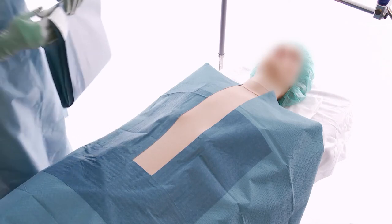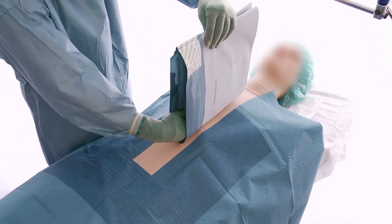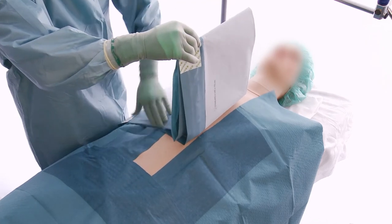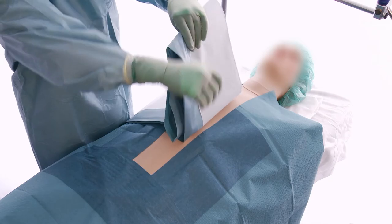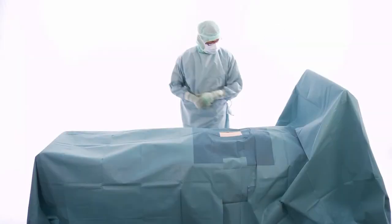Remove the middle release paper of the second OP sheet and place your hand inside the folding. Repeat the same procedure as before and unfold fully towards the patient's head. Draping is then completed.